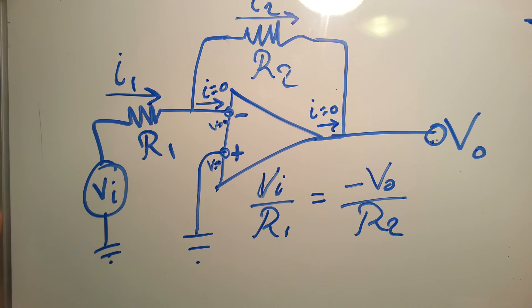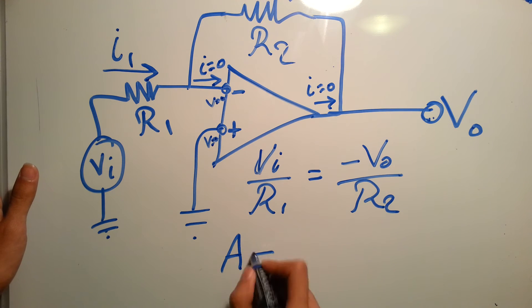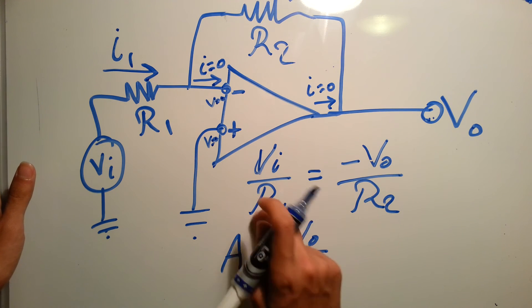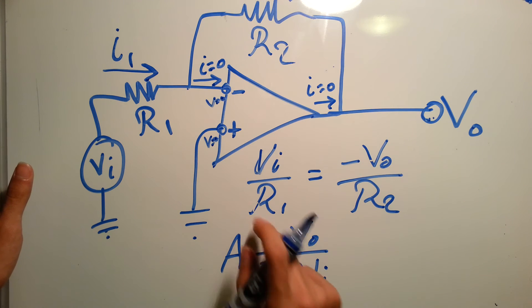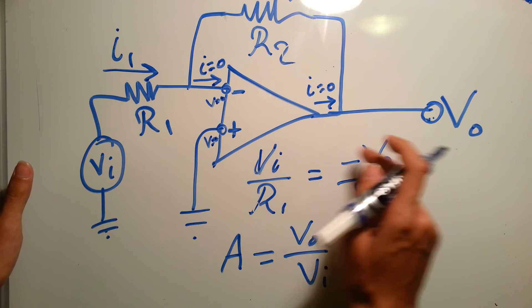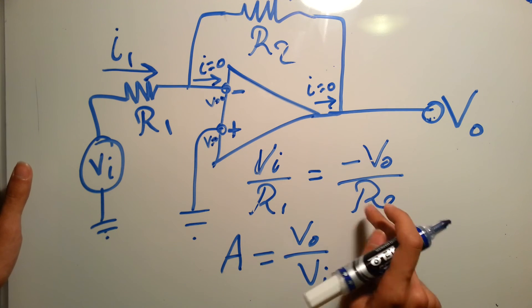if we want to calculate the gain, the gain A equals V output over V input. So we move this one over here and we kept the minus there. We keep this one there, we move the V input to the other side. So V out over V input equals minus R2 over R1.